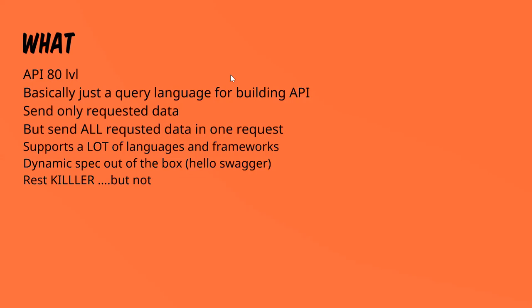GraphQL — where QL stands for Query Language. When you ask an API to give you some object, GraphQL allows you to specify exactly what you want to know about that object. GraphQL is about filtering data and providing you all the required tools for such filtering.